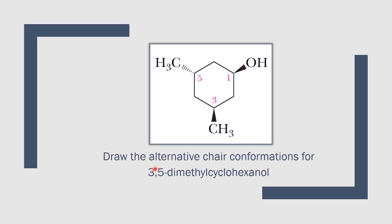Draw the alternative chair conformations for 3,5-dimethylcyclohexanol. We have the hydroxyl group at carbon number 1 and two methyl groups, one at carbon number 3 and the other at carbon number 5. This is a planar hexagon.